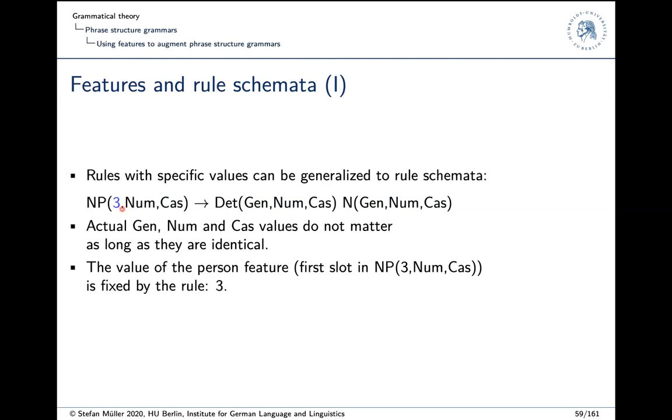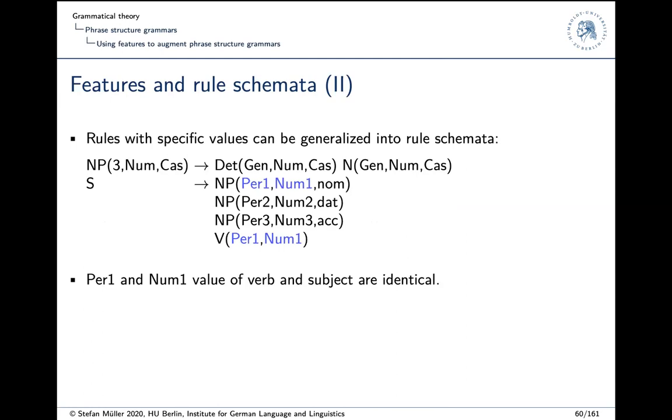Okay. The number three of the NP here is just fixed because you have a determiner and a noun, it's clear that this is an NP in the third person. And so you just write that down and for personal pronouns like I or you, you have different person features. Wow. Now for the sentence rule, we can just establish the subject-verb agreement here by using the same feature, same variable, so to say for the feature. So person one of the nominative element has to have the same value as the person one feature of the verb. So subject-verb agreement is taken care of.